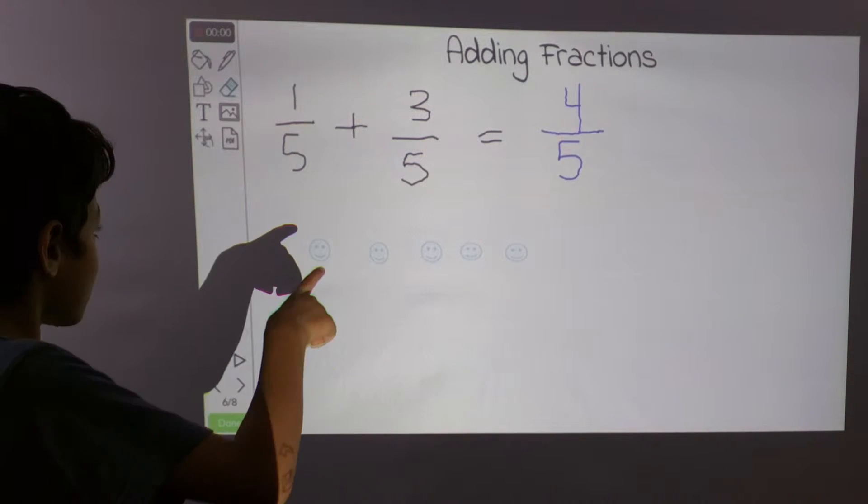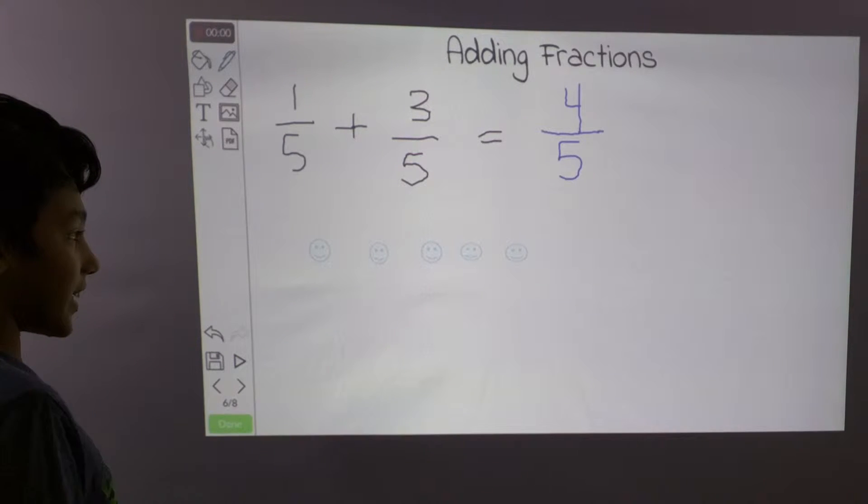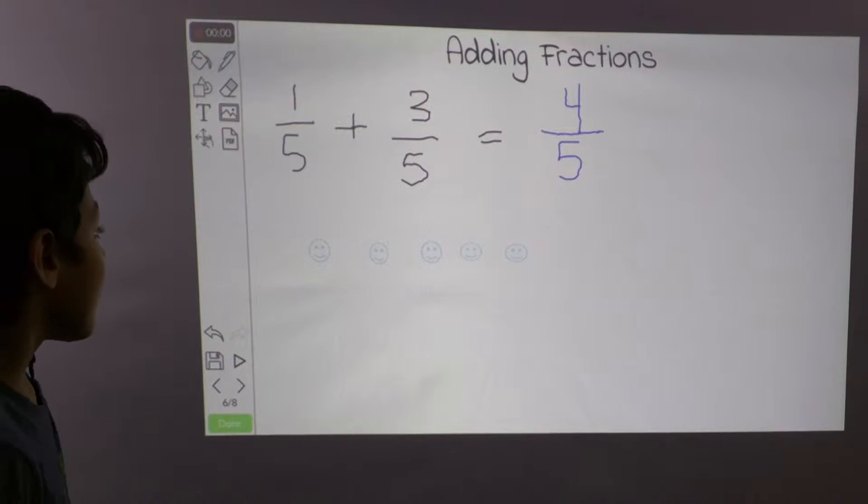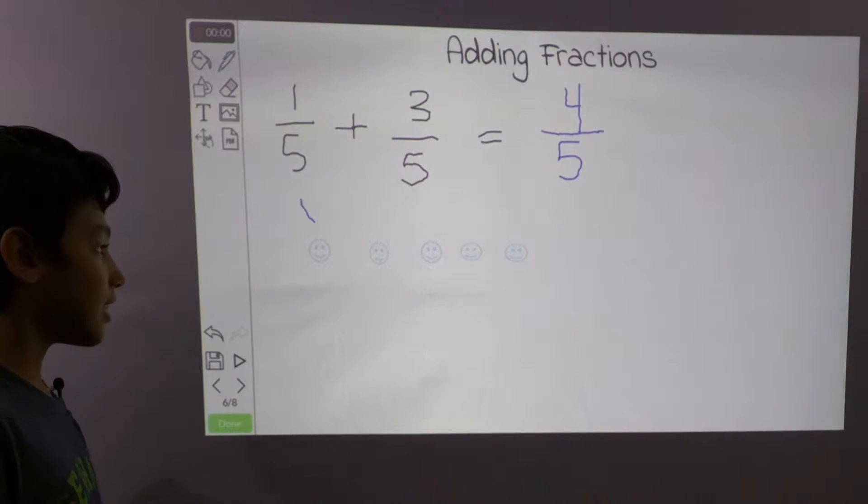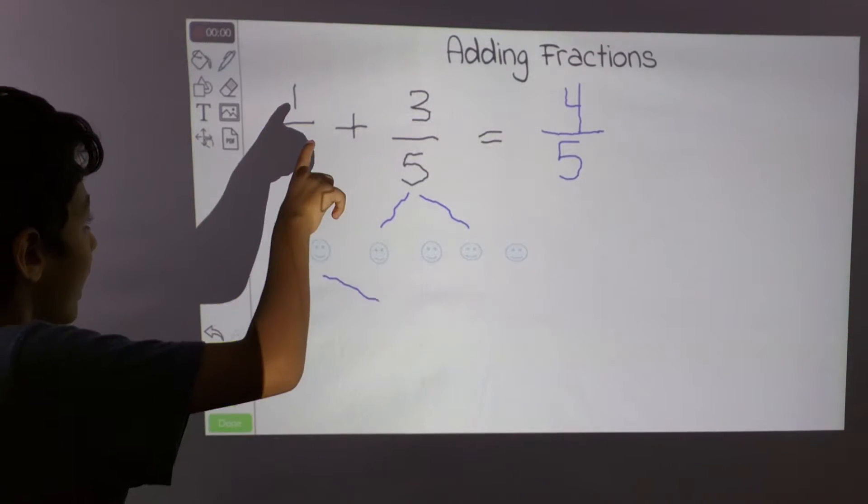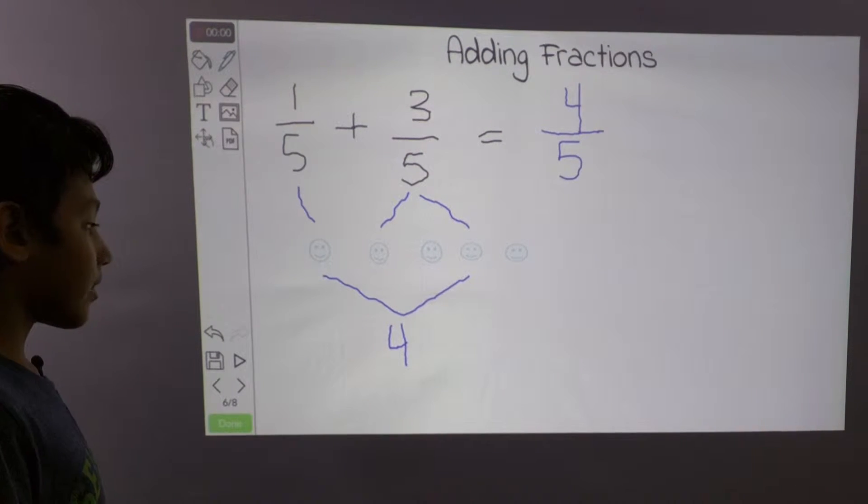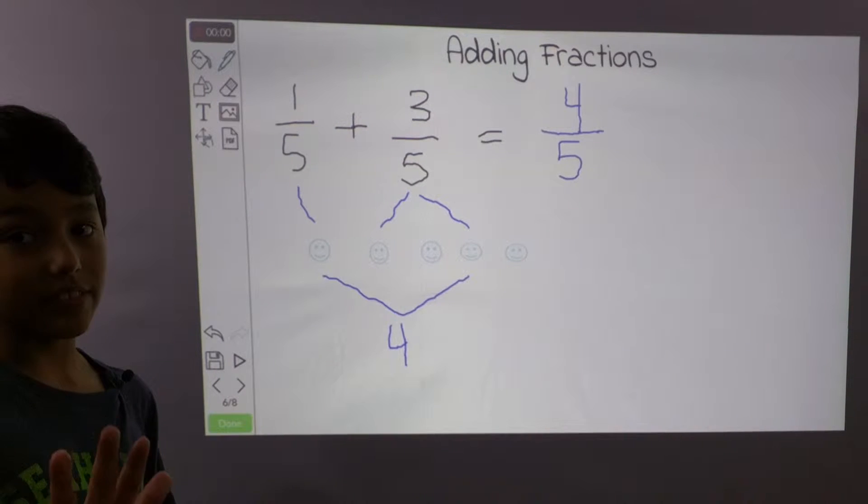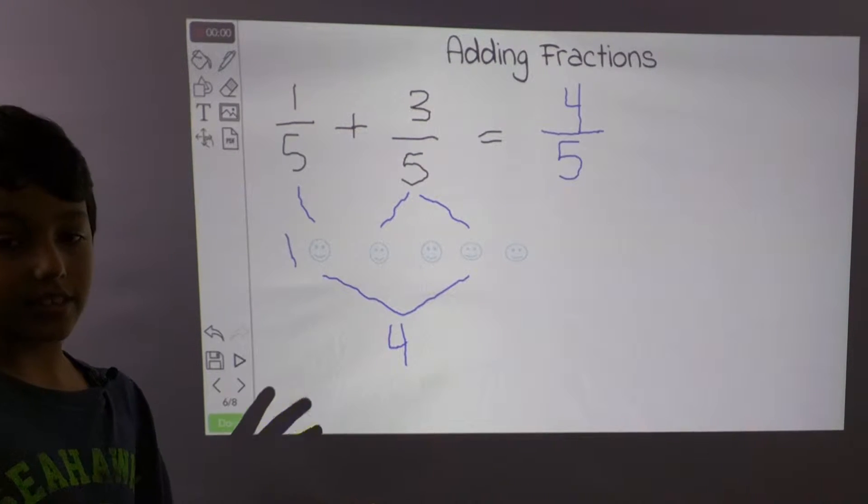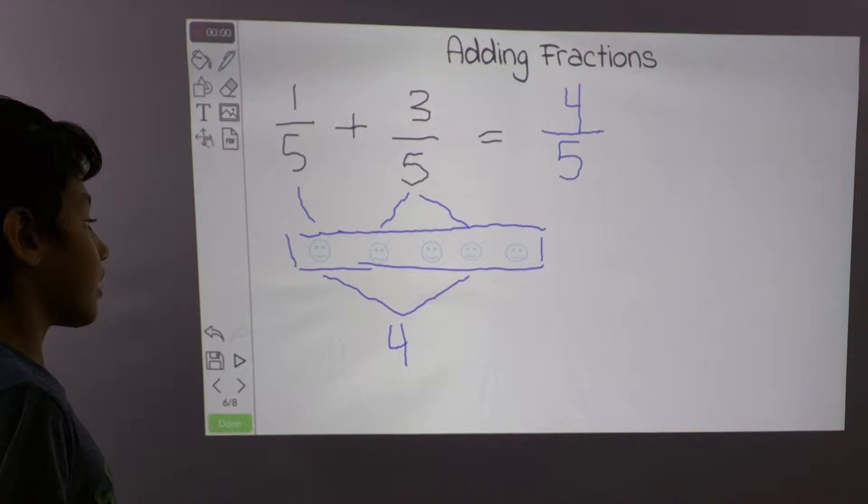So I'm going to explain why the denominators remain the same. Let's say you have 5 happy face cookies. And then you had 1 in the morning, and then you decided to get 3 more. So if you add those, 1, 2, 3, 4, you had 4 out of the 5 cookies. There was only 5 cookies, and you took 4. So that's why it is 4 out of 5.